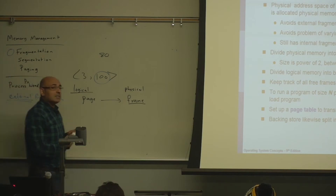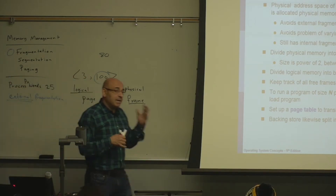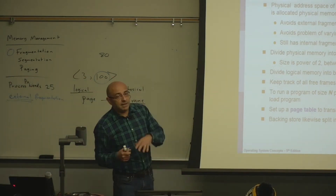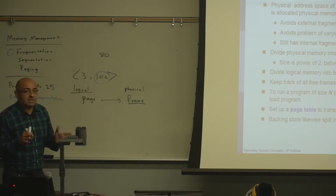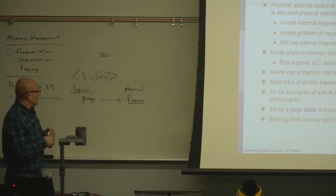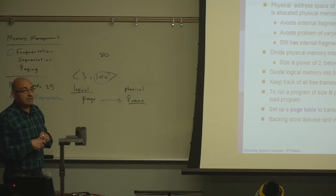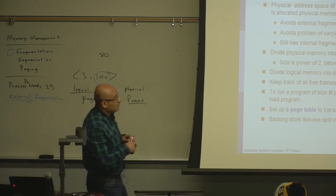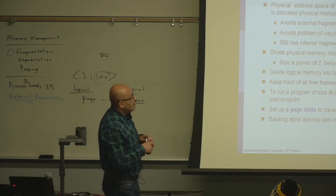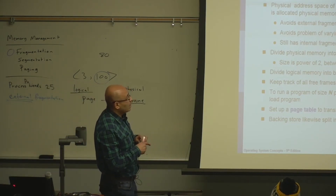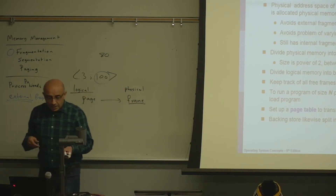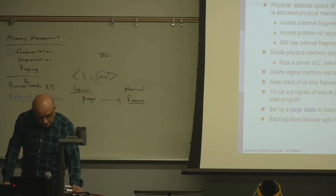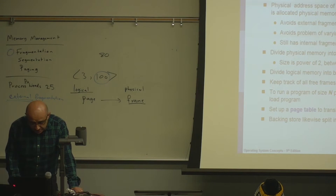If a process consists of 10 pages, we need 10 frames. The page and the frame will have the same size. If a process needs 10 pages, we need 10 frames of physical memory to fit that process.